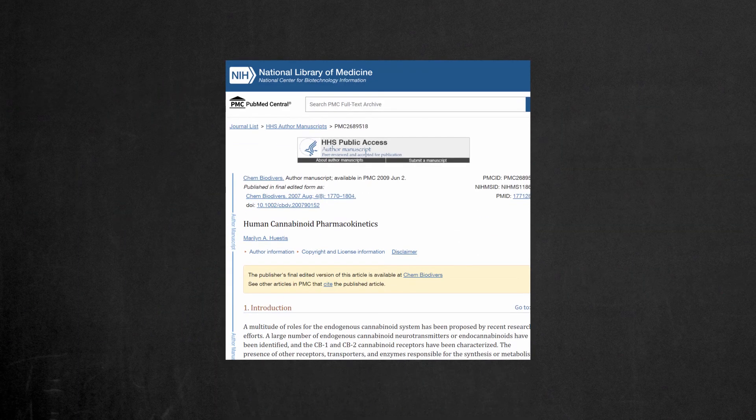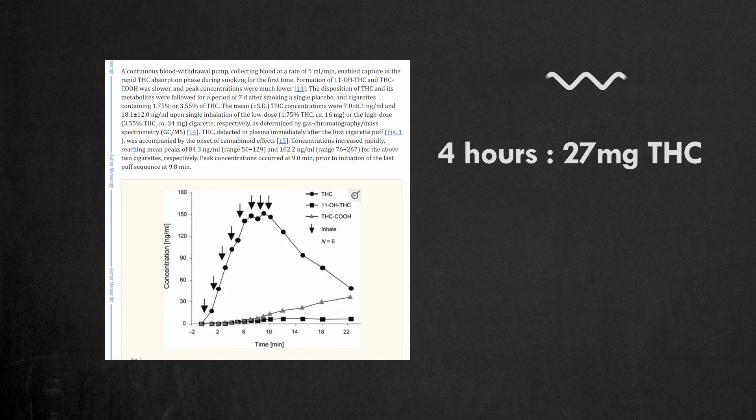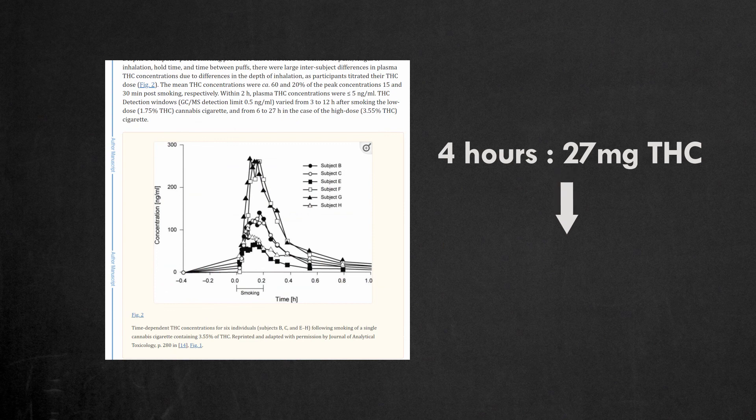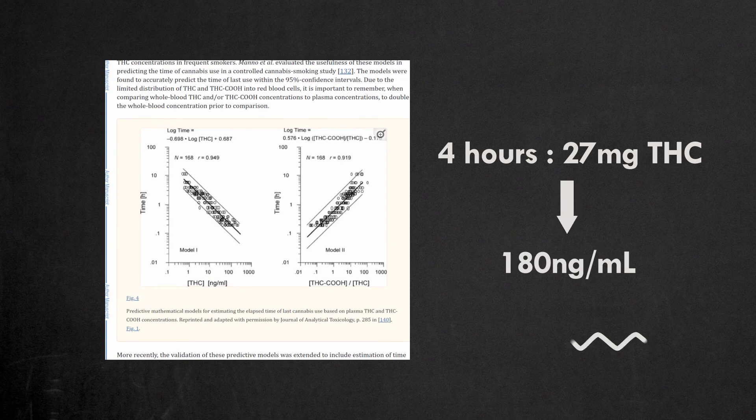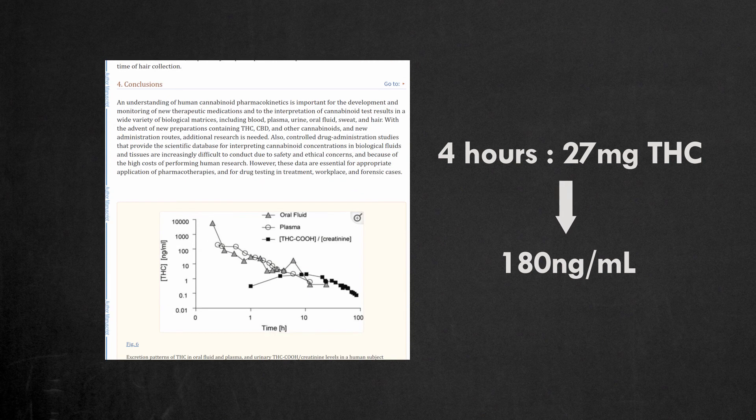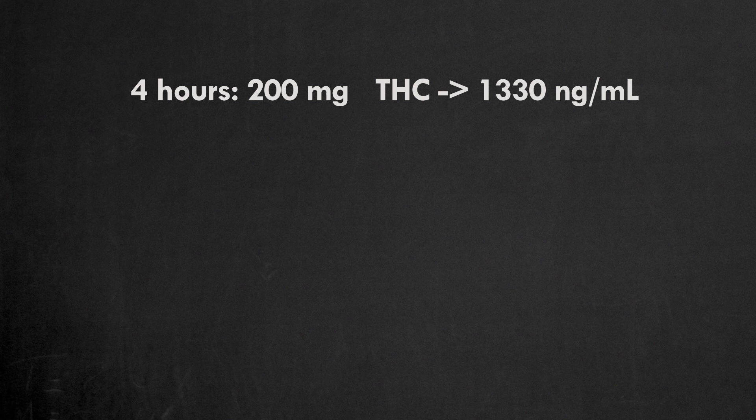According to the study that will help our calculations, if there is 27 mg of THC in a joint, the amount of THC in a smoker's urine would be 180 ng per ml after 4 hours. Using cross-multiplication, we have that after smoking 200 mg of THC, the concentration of THC in the urine of Jennifer would be 1,330 ng per ml.